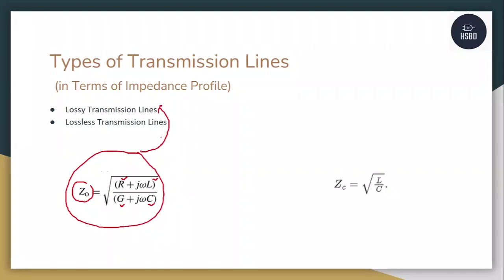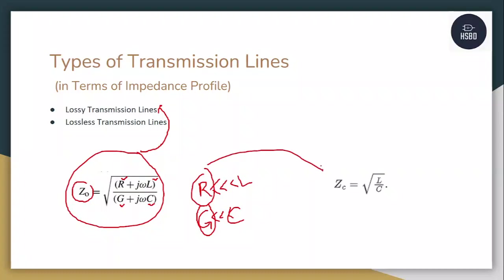In the case of a lossless transmission line, the value of R becomes infinitesimally smaller than L, and the value of G becomes infinitesimally smaller than C, so both values are effectively zero. Putting R and G as zero in the lossy formula, we get the lossless formula: Z0 = √(L/C). Z0 and ZC are both the same — called characteristic impedance or target impedance — and they refer to the same thing.